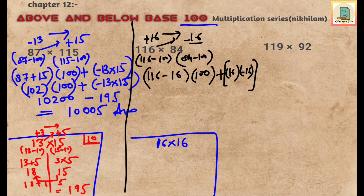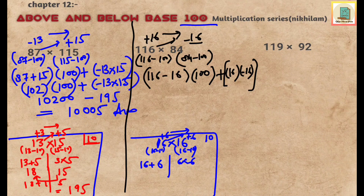For 16 multiplied by 16 with base 10: deviations are 16 minus 10 equals plus 6, and again plus 6. Make a partition: first number plus second deviation is 16 plus 6, and second partition is 6 multiplied by 6. So 16 plus 6 gives 22, and 6 times 6 is 36. Since base is 10, the 3 carries over: 22 plus 3 and 6, giving final answer of 256.